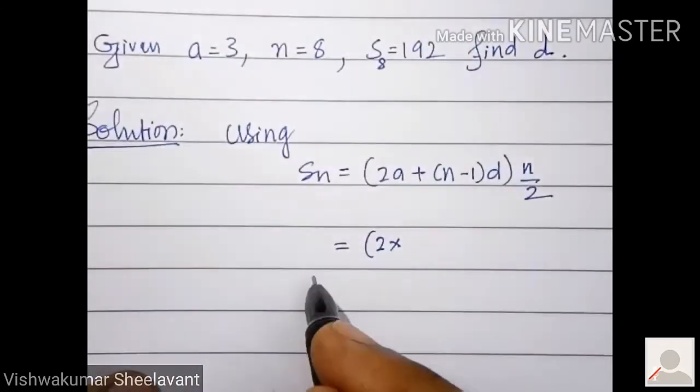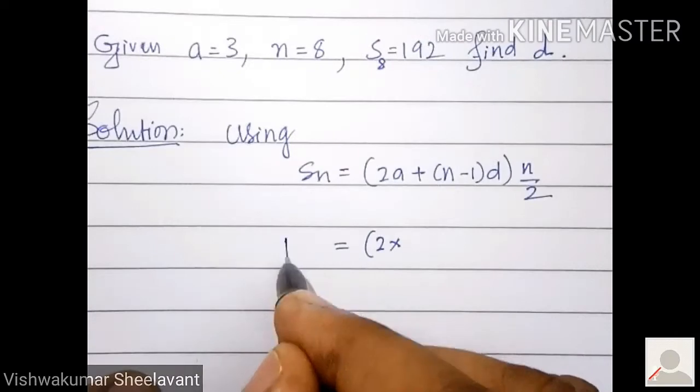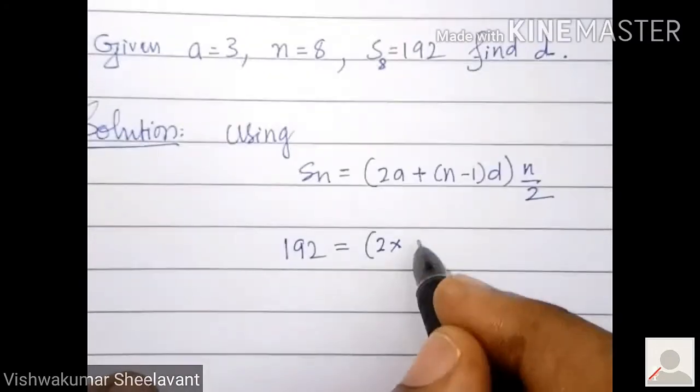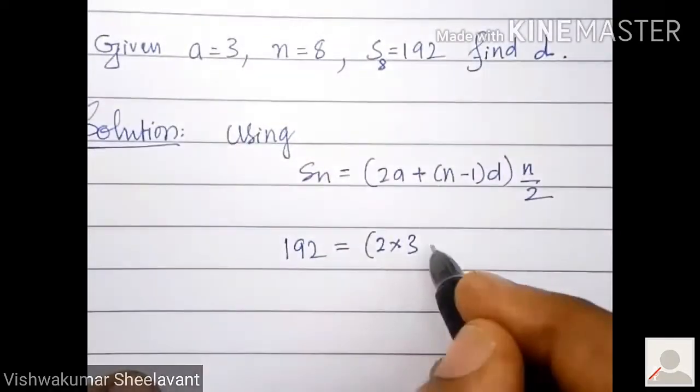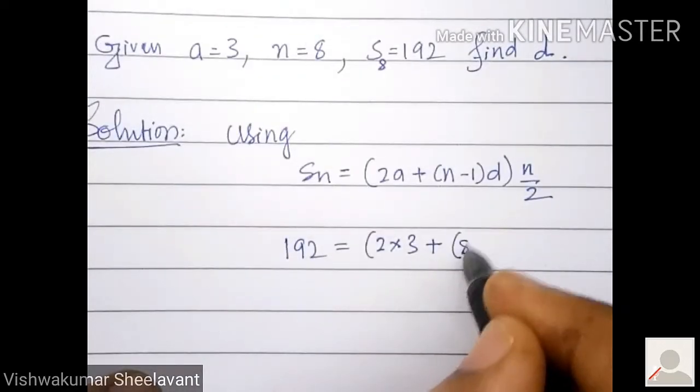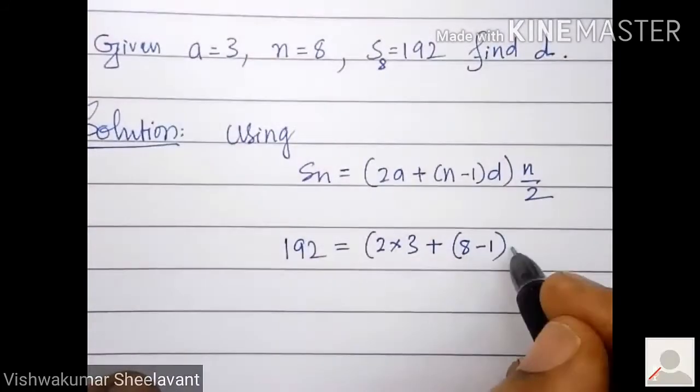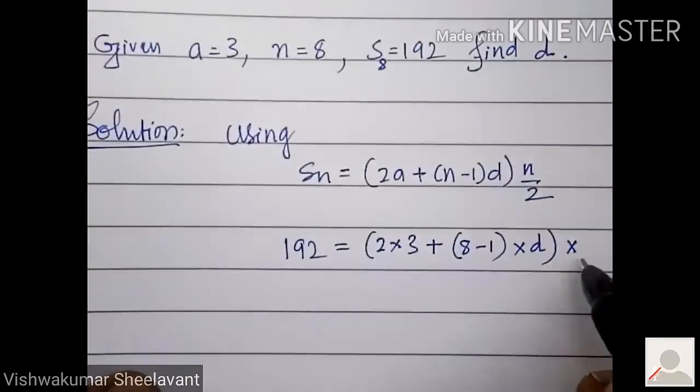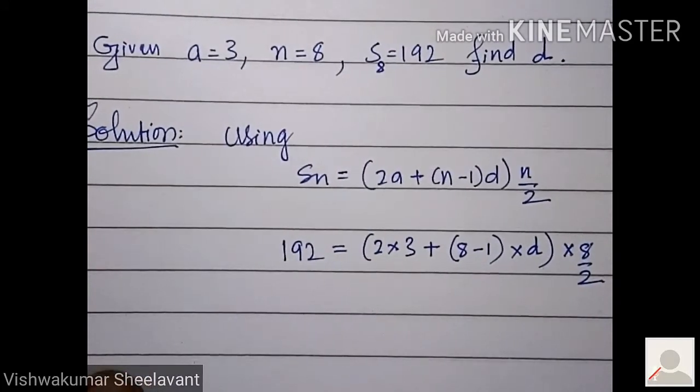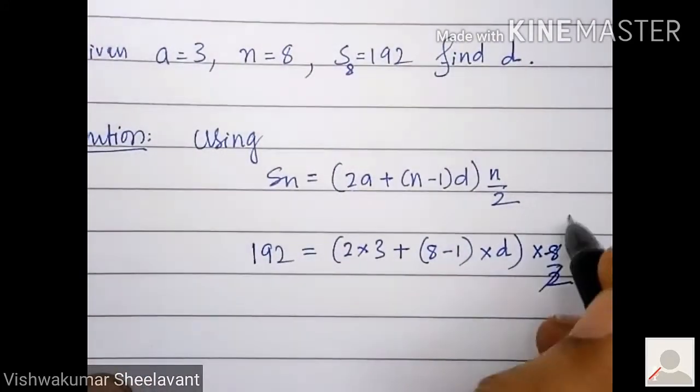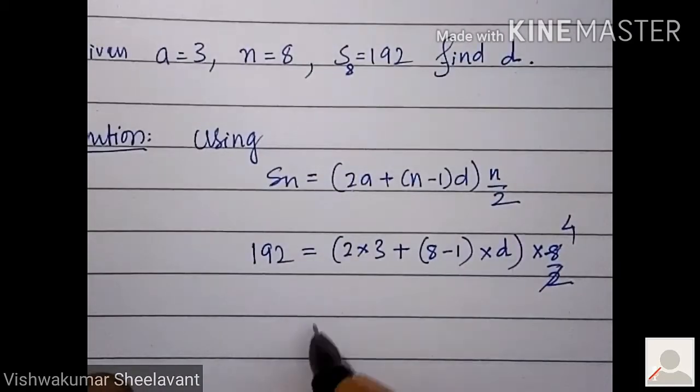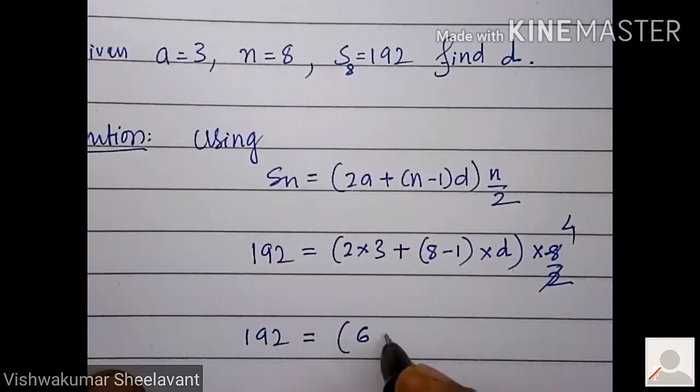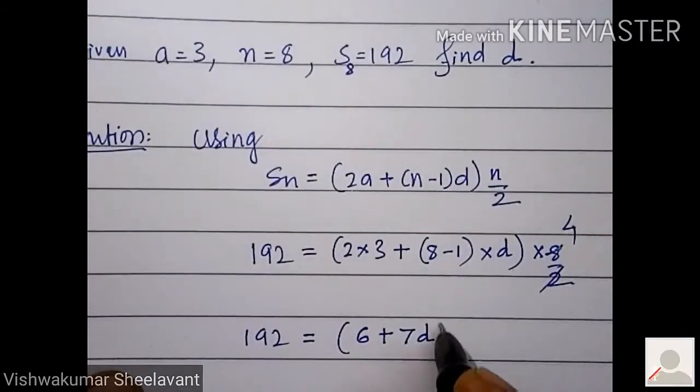S_8 is given, so I will write here 192 equals 2 into 3 plus 8 minus 1 into d. Here n is 8, so 8 by 2. 192 equals 6 plus 7d into 4.